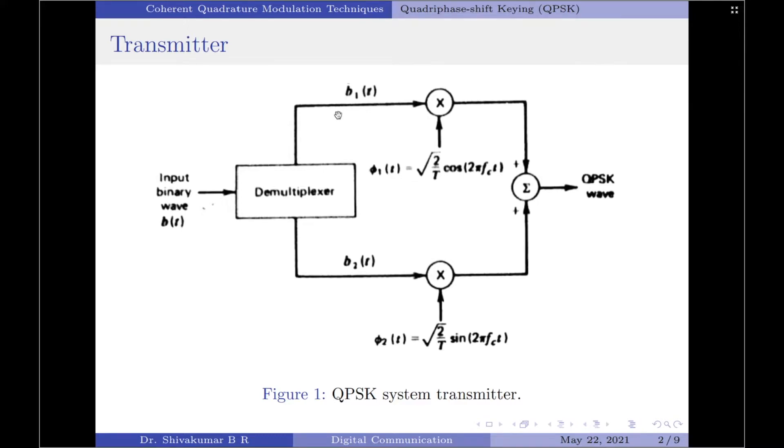It should be noted that in any signaling interval, the amplitudes of b1(t) and b2(t) will equal the signal coefficients si1 and si2 respectively, depending upon the particular dibit that is being transmitted. This is a QPSK system.